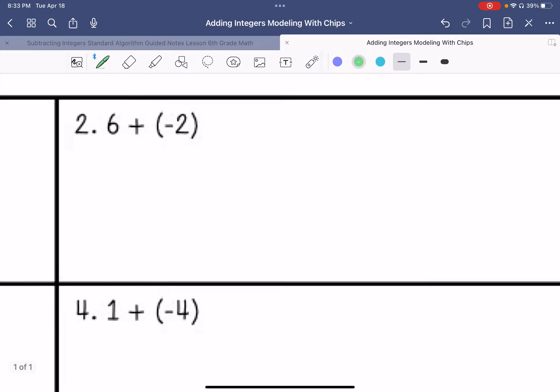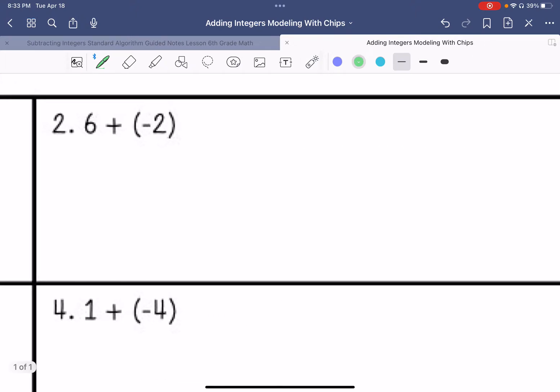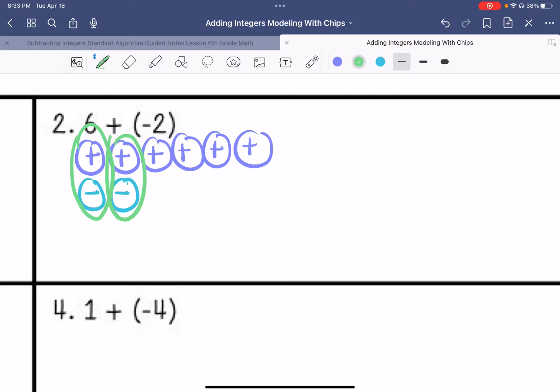Number two. We have six positives and two negatives. We're going to create our zero pairs, and what we have left is four positives. So our answer is going to be four.